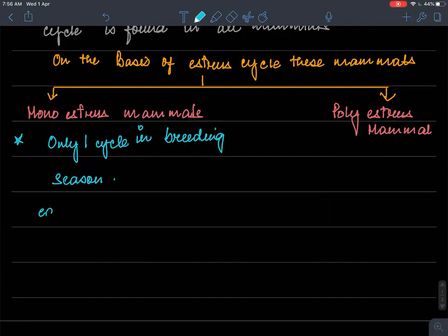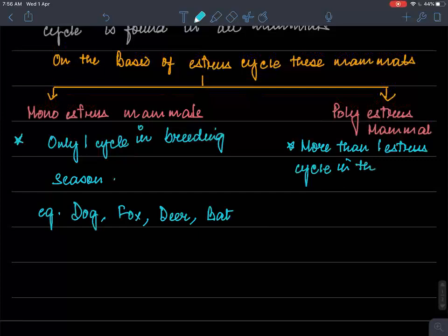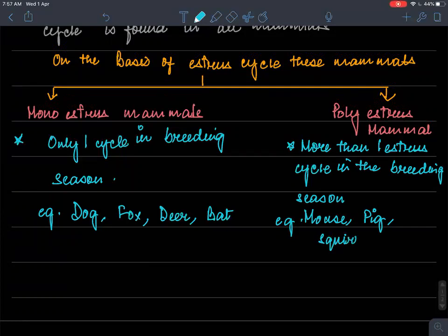As for example, this is found in dog, fox, deer and bat. Polyestrus cycle have more than one estrus cycle in the breeding season. As for example, mouse, pig, squirrel, cat, all of them show polyestrus cycle.